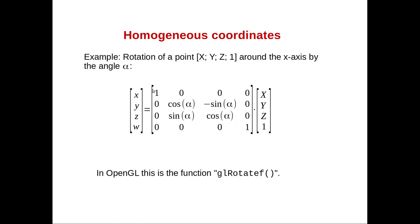So we rotate a point around the x-axis by the angle alpha. The x-axis coordinate is unchanged, and y and z perform the rotation of the coordinates around the x-axis. This is implemented in OpenGL with the function glRotatef.